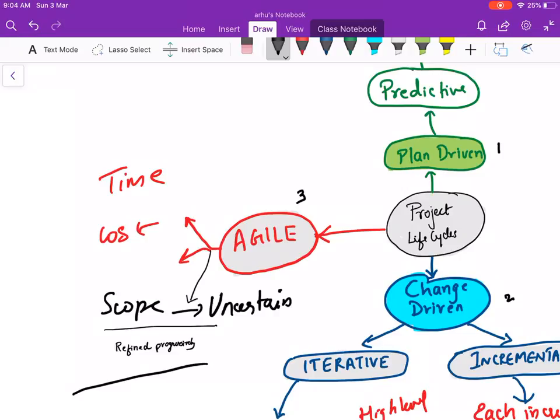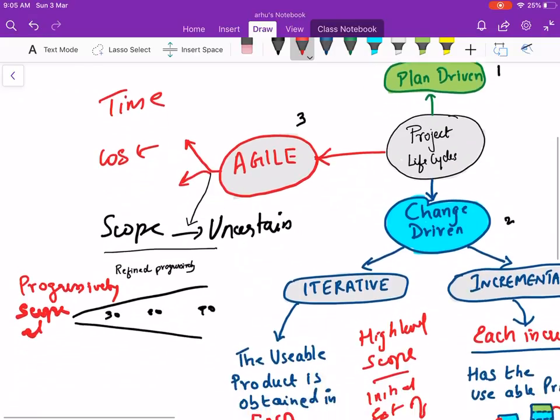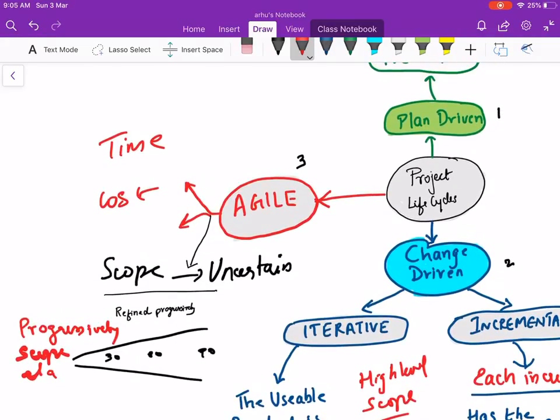Now what happens here is progressively the scope is elaborated. Scope becomes clearer as we move forward, let's say 30 days, 60 days, 90 days. So progressively your scope is elaborated. This is also known as a concept called progressive elaboration.